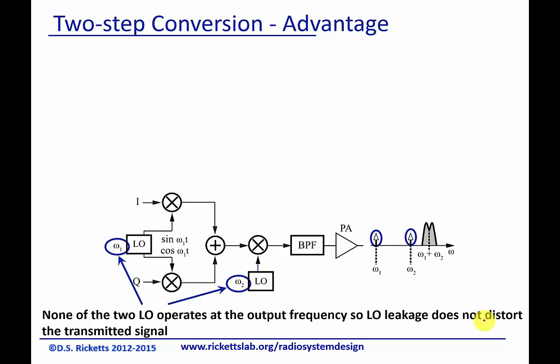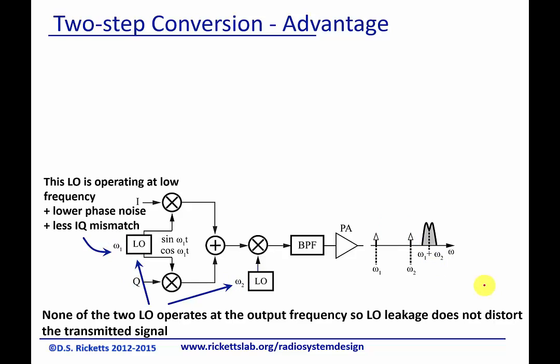One of the benefits of this architecture, as you can see here in the bottom of the slide, is that neither of the LOs appears in the signal. Any carrier leakage is just going to pop up at the original omega-1 and omega-2, but doesn't show up at our signal. So that's the major benefit: we've eliminated any carrier feedthrough that might be a problem for us.